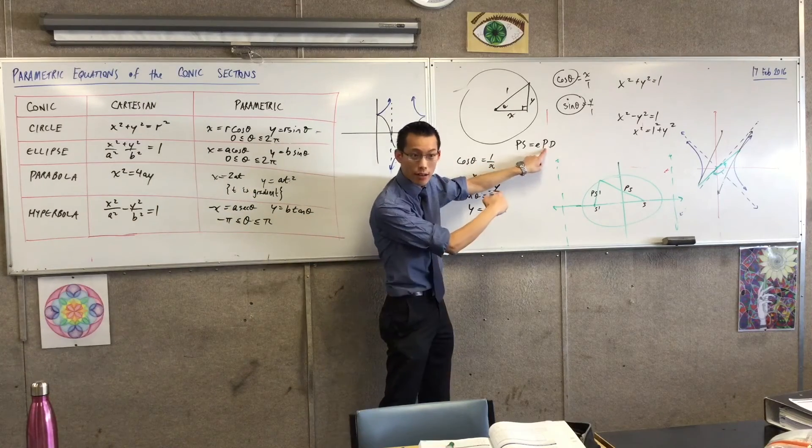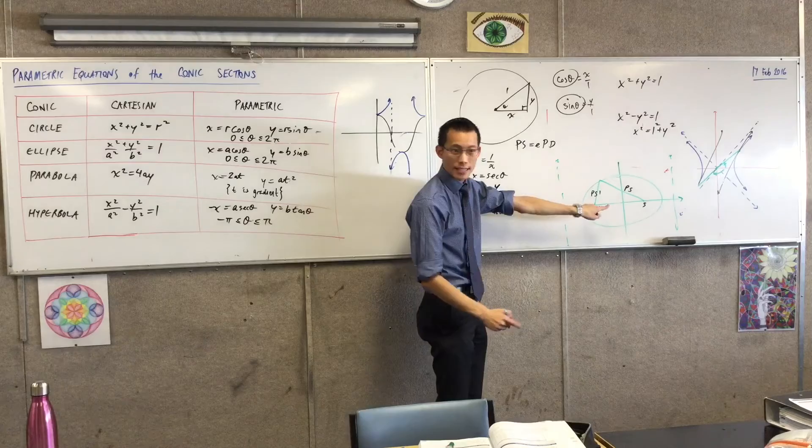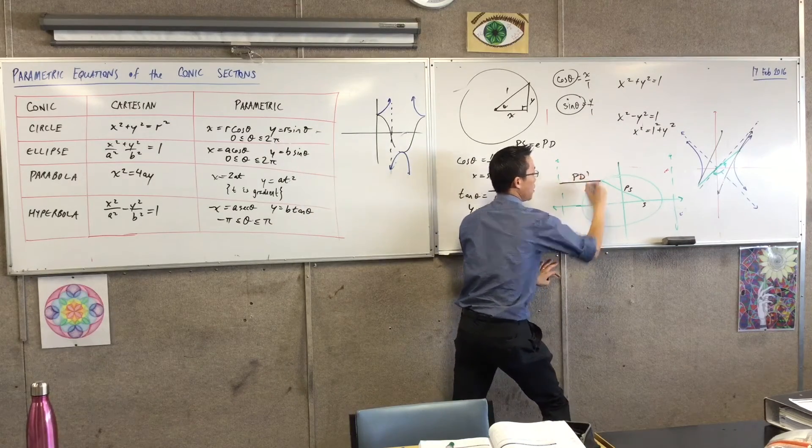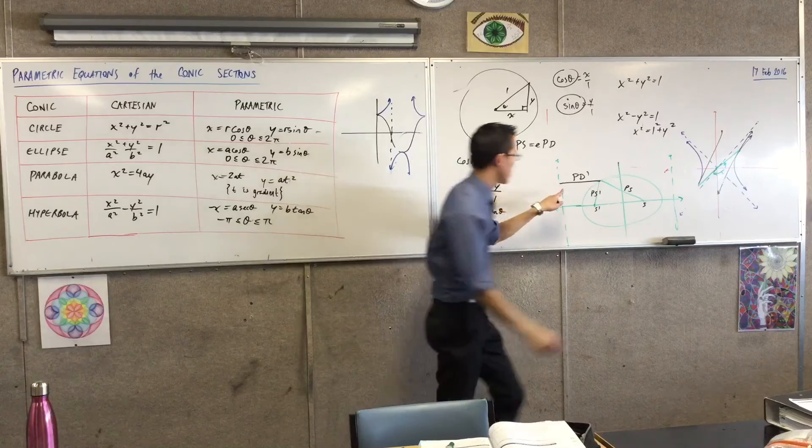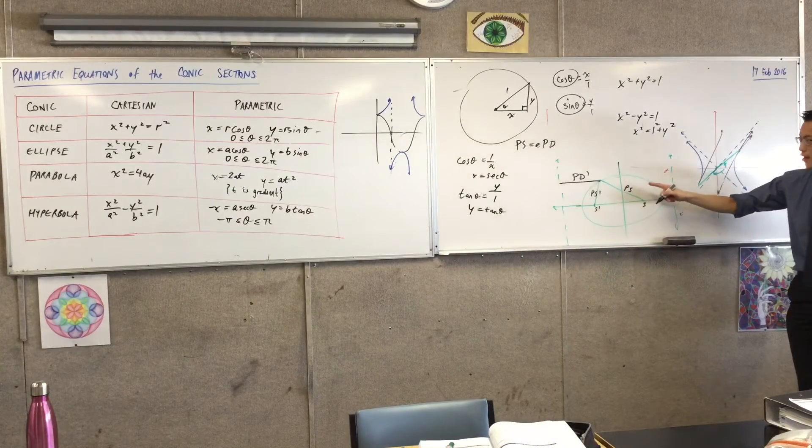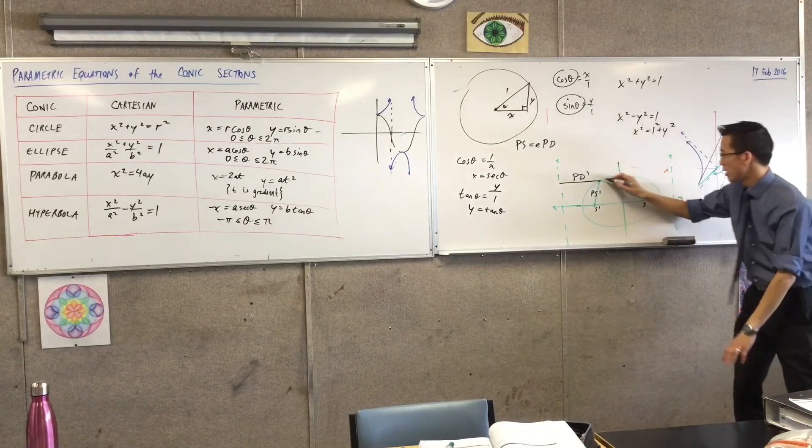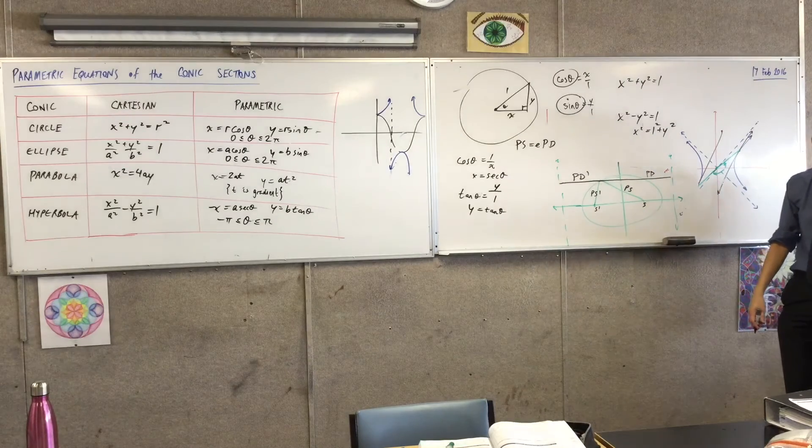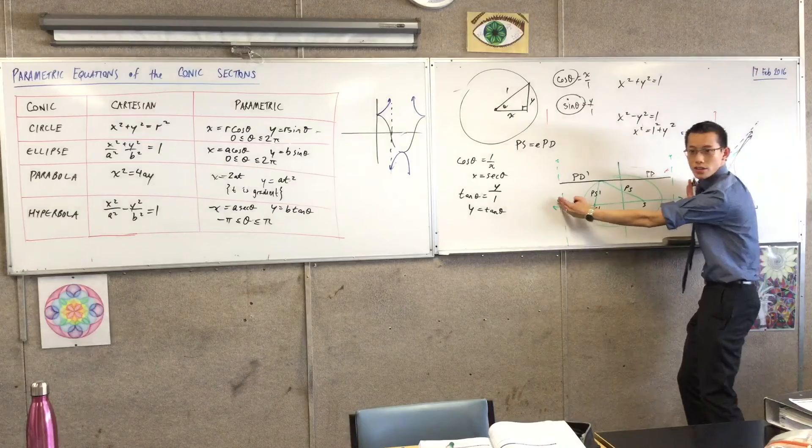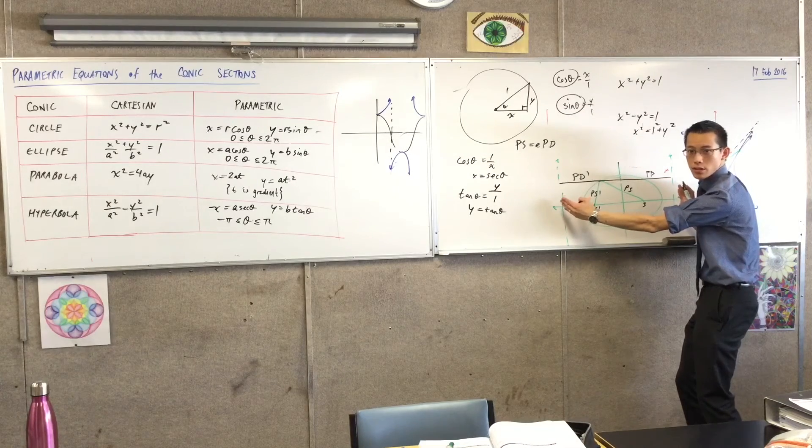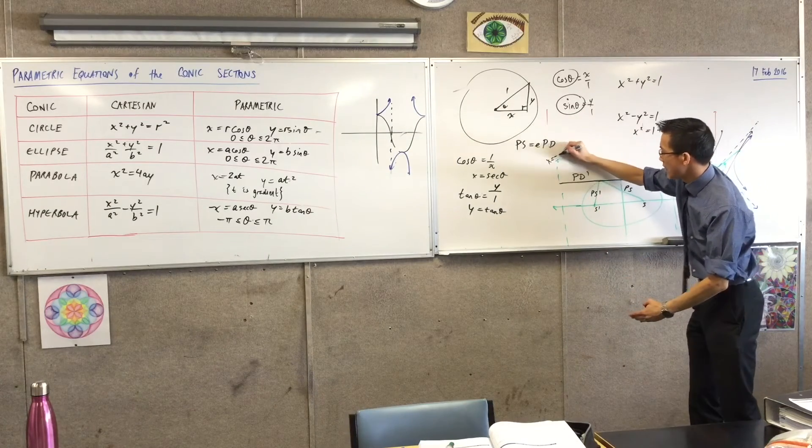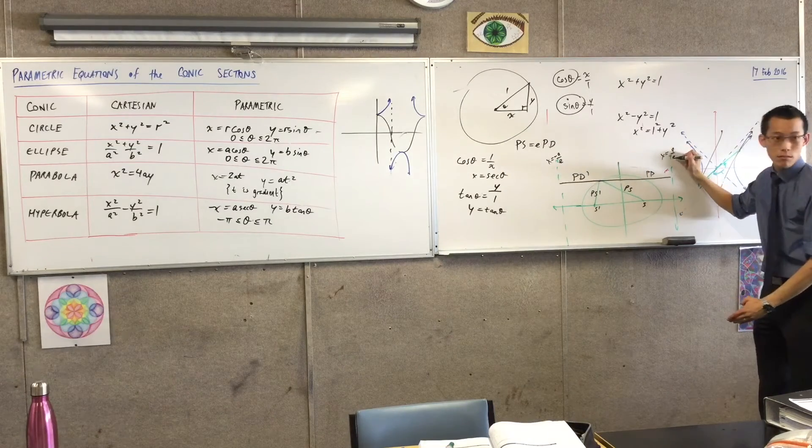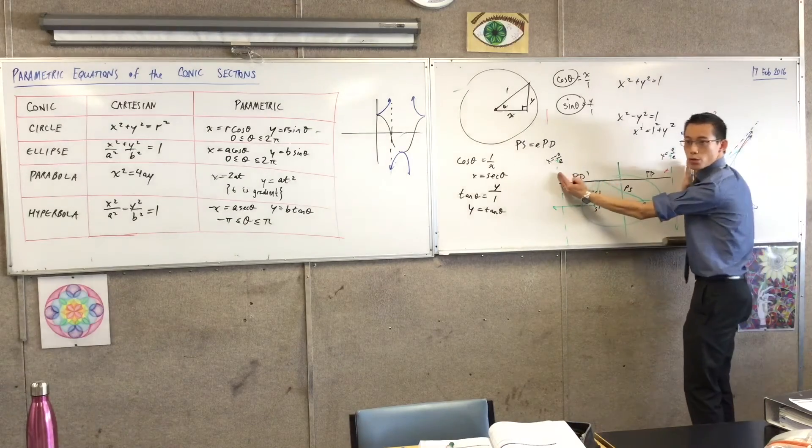Well, this is ps dash. Pd dash is over here. This is the corresponding directrix. And then pd, just regular pd, is going to be over here. Do you agree with that? But hold on a second. What are the equations of these two lines? The directrixes. This is x equals negative a on e and x equals a on e. So what is this total distance?